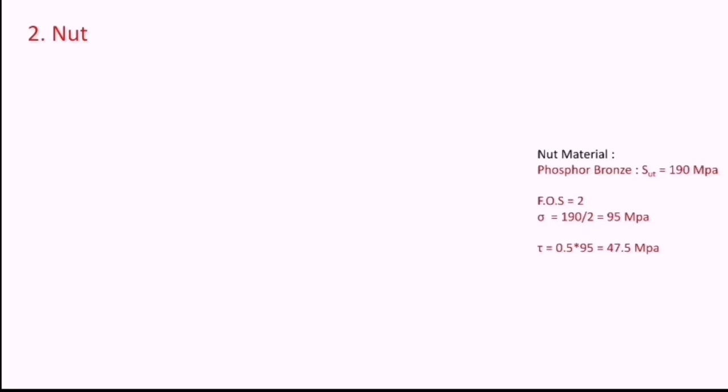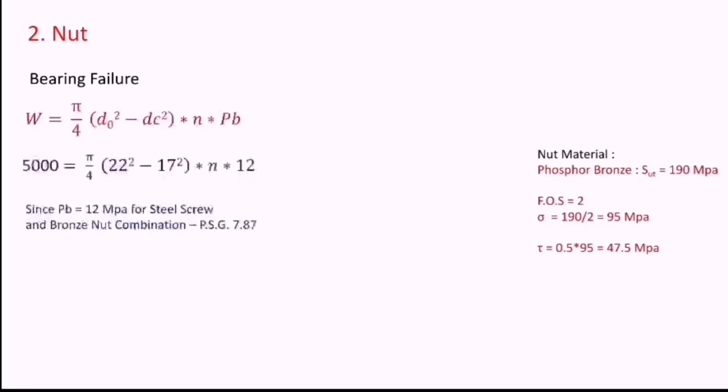Let us consider the second part, that is nut. The material as we decided earlier, we will use phosphor bronze, the values of which are shown. The threads of the nut of a C clamp are subjected to compression and rotation, that is shear, at the same time. This kind of failure is known as bearing failure. Considering bearing failure of one ring, we have W = π/4(d₀² - dc²). This is area of one ring. If there are n number of rings, multiplied by n, and this all will be multiplied by pressure, that is bearing pressure. On substituting the values, I will get the value of n as 2.72, that is approximately equal to 3.